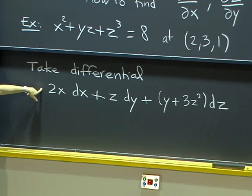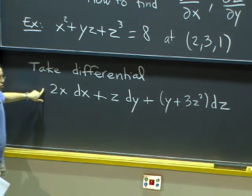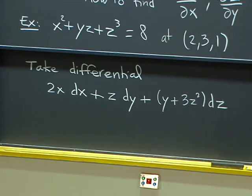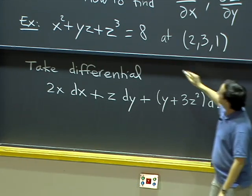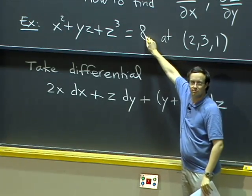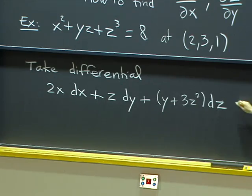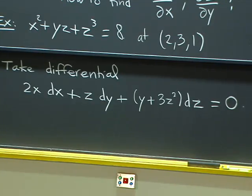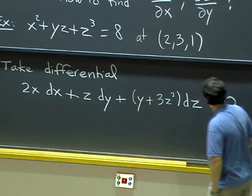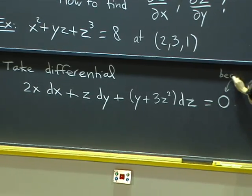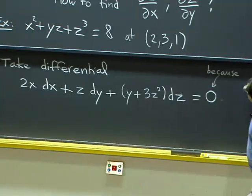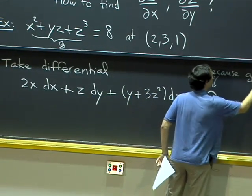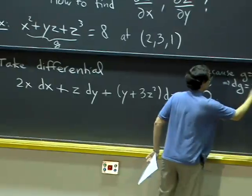Now what do I do with this? Well, this represents somehow variations of g. But I've set this thing equal to 8, and 8 is a constant, so it doesn't change. So in fact we can set dg equal to zero, because g equals 8 is constant. That means we set dg equal to zero.